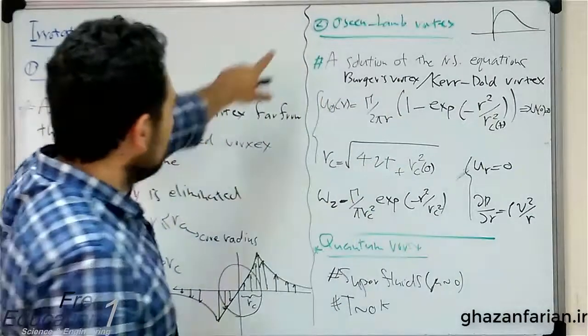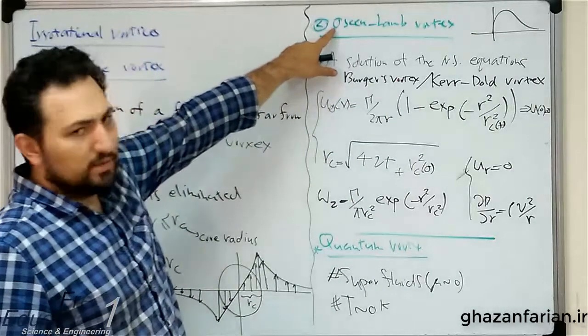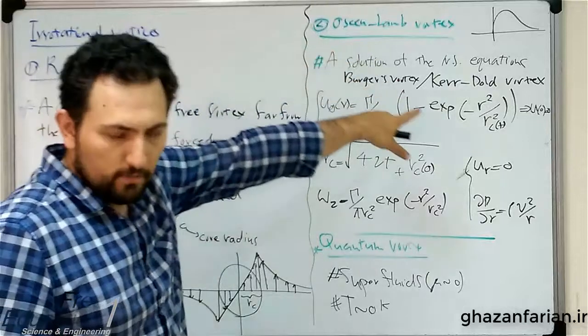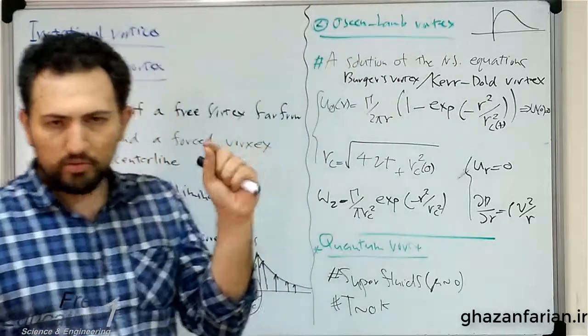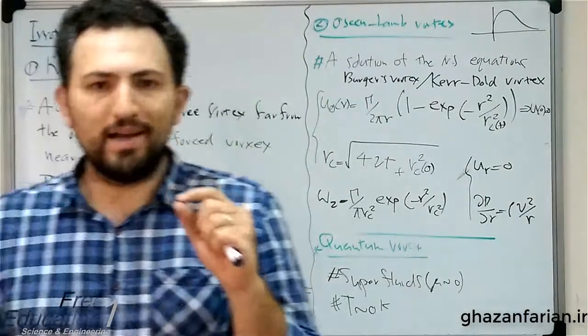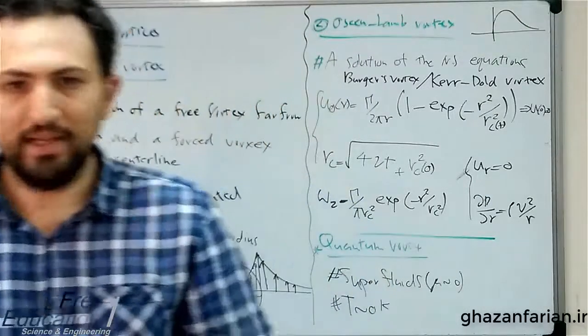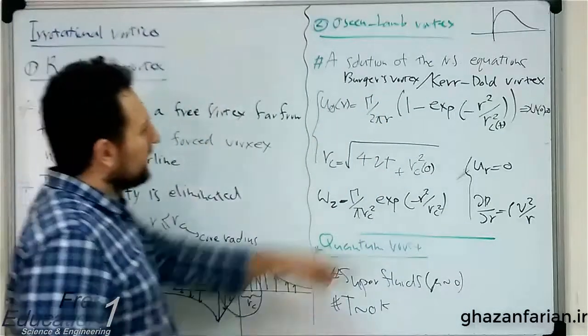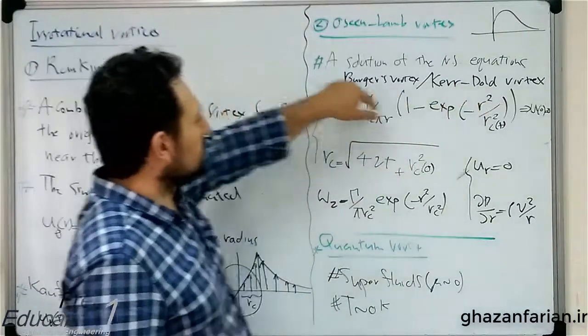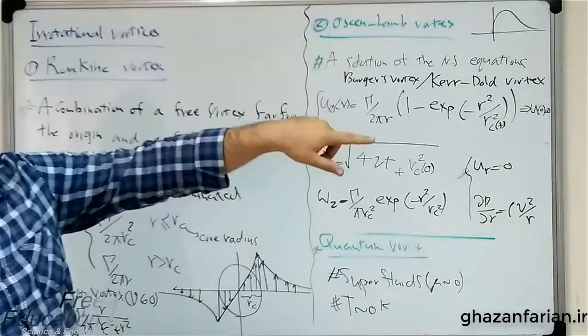This category number two is the Oseen-Lamb vortex. The Oseen-Lamb vortex is maybe the most famous item in this list, in this category, but there are others, for example Burgers vortex or Kerr-Dolt vortex. These vortices are all solutions of the Navier-Stokes equation containing the viscous term.